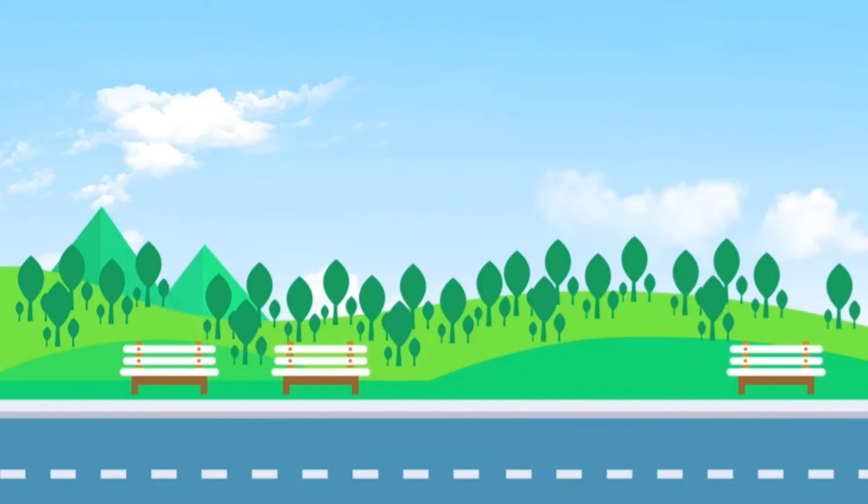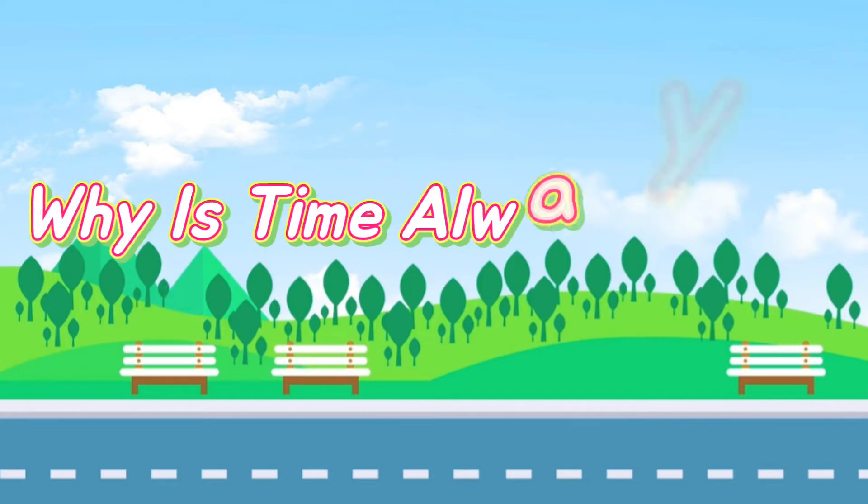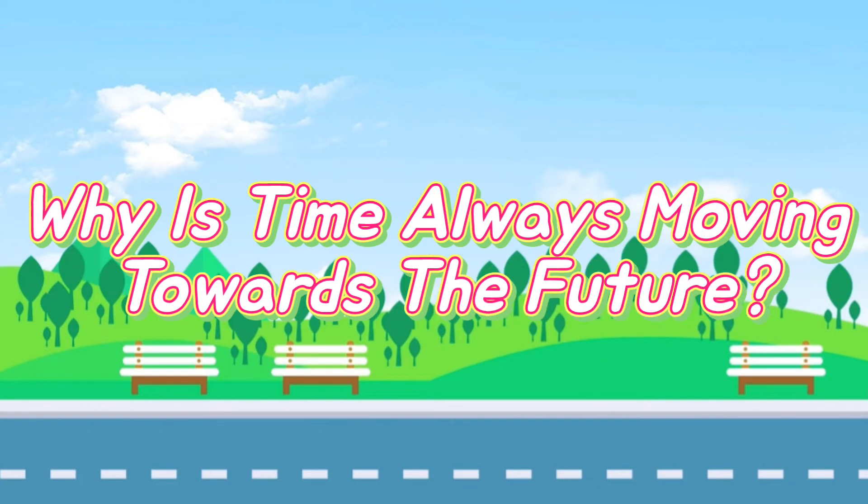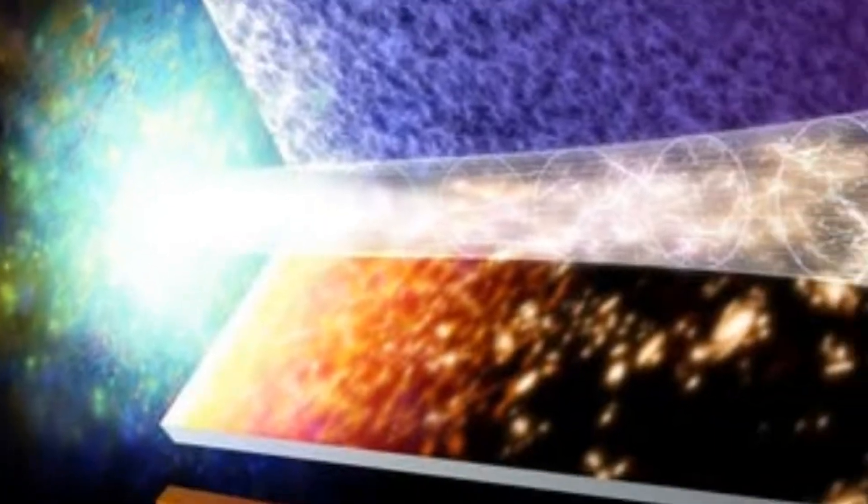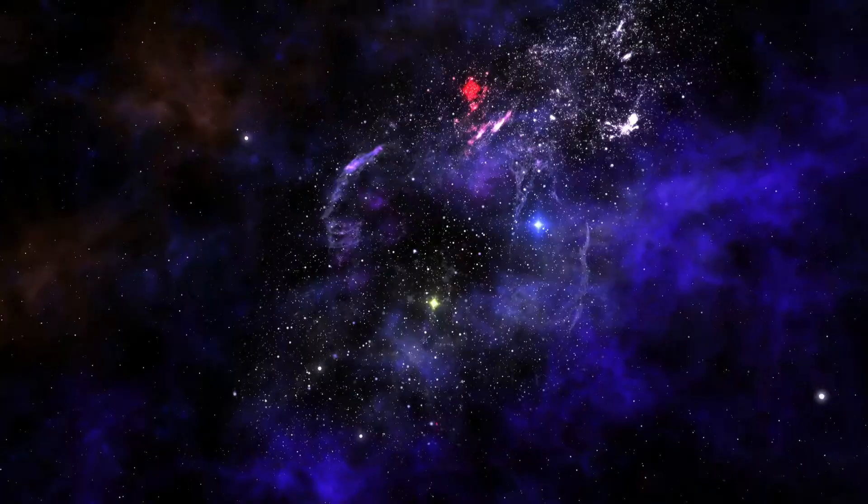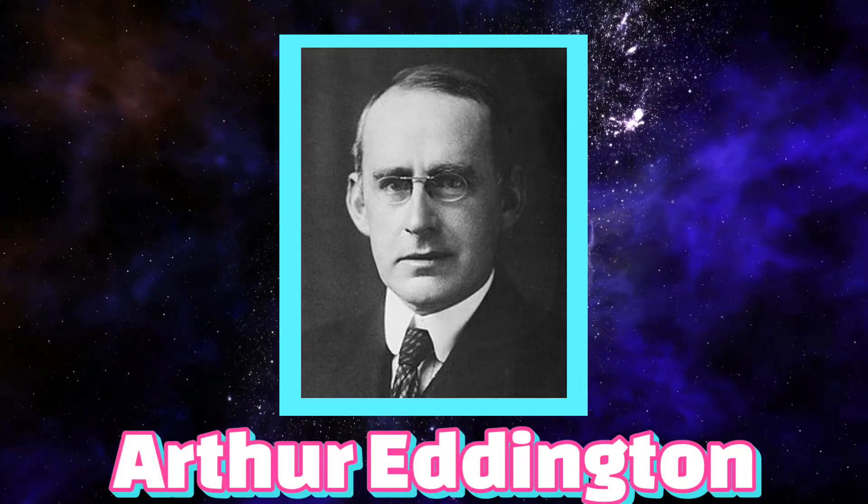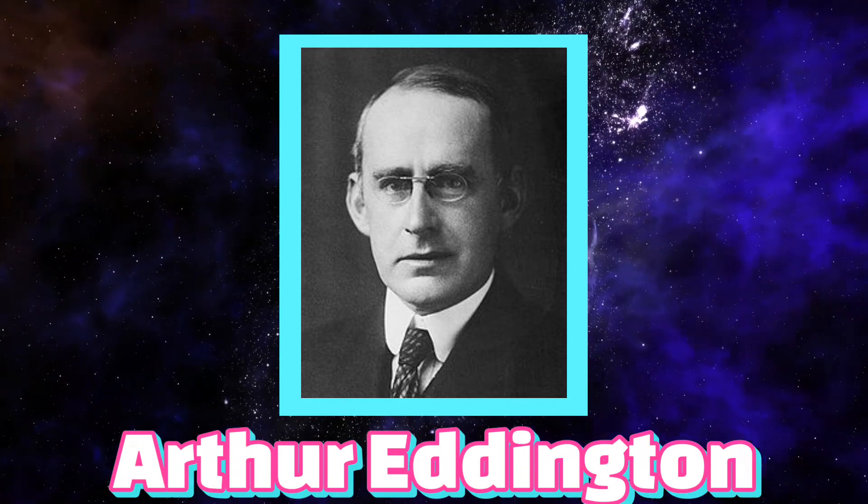But the question which pops up here is why is time always moving towards the future? And this concept known as the arrow of time was brought out by an astrophysicist named Arthur Eddington in 1927. And yes, this is yet an unsolved physics mystery.